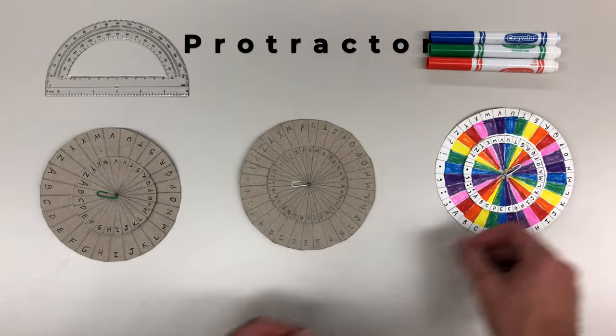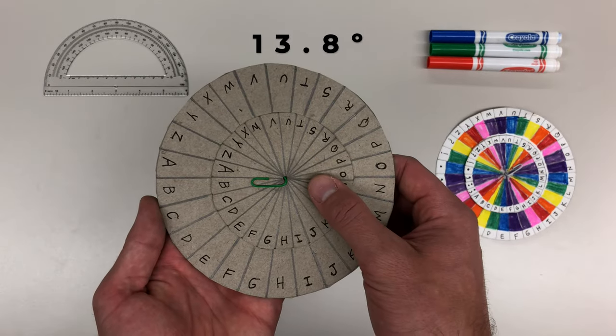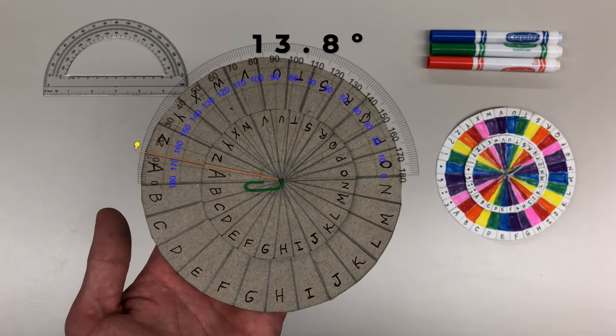You can also use a protractor to create 26 equal pieces by having each piece 13.8 degrees apart. This will create 26 pieces for the 26 letters of the English alphabet.